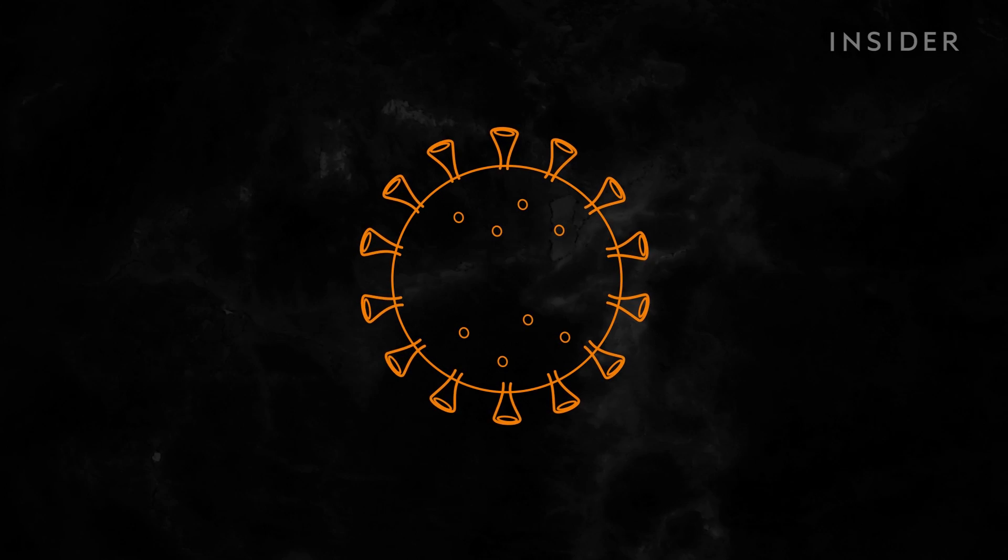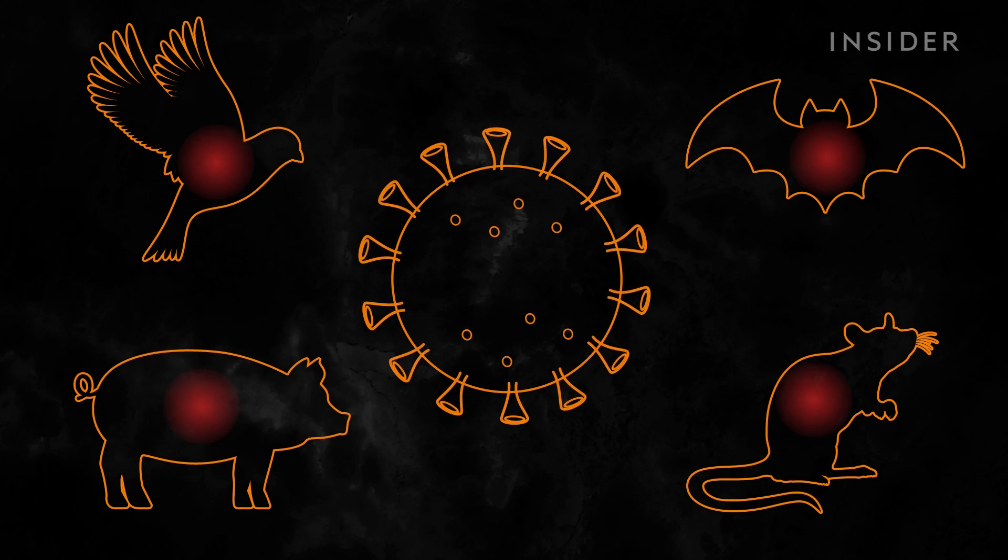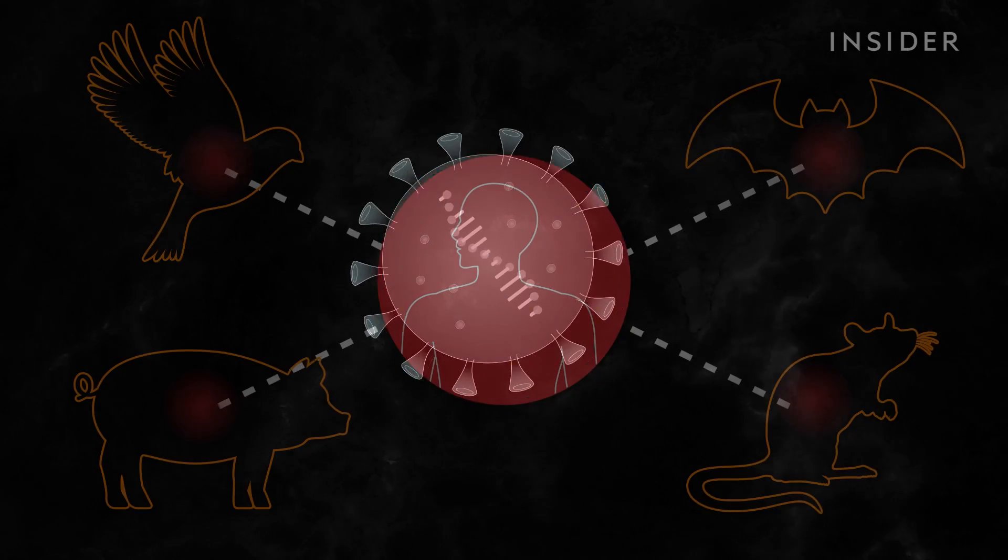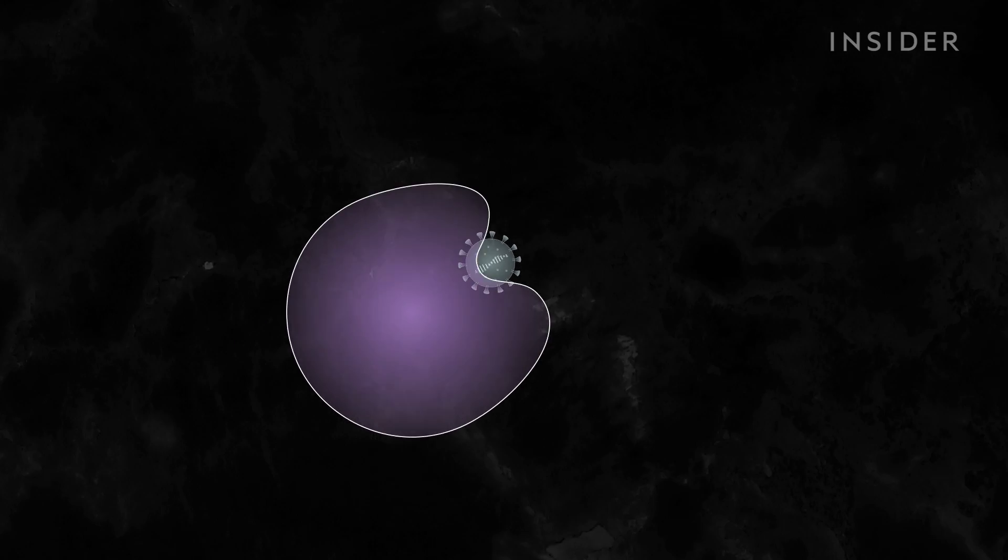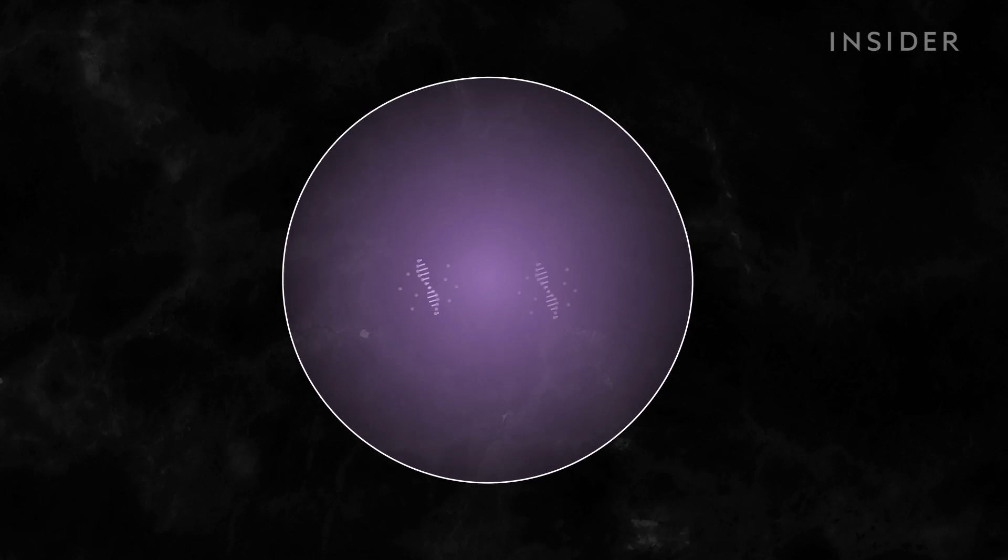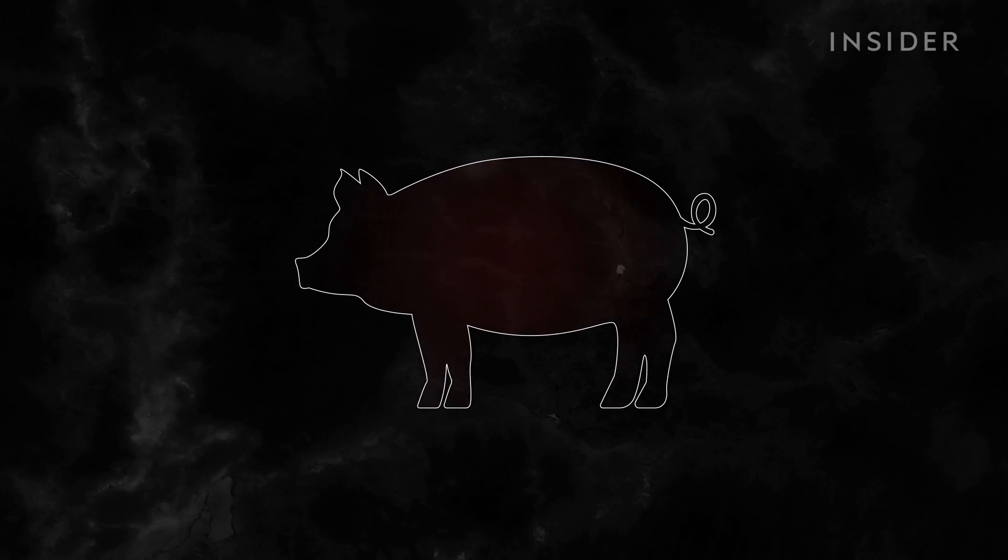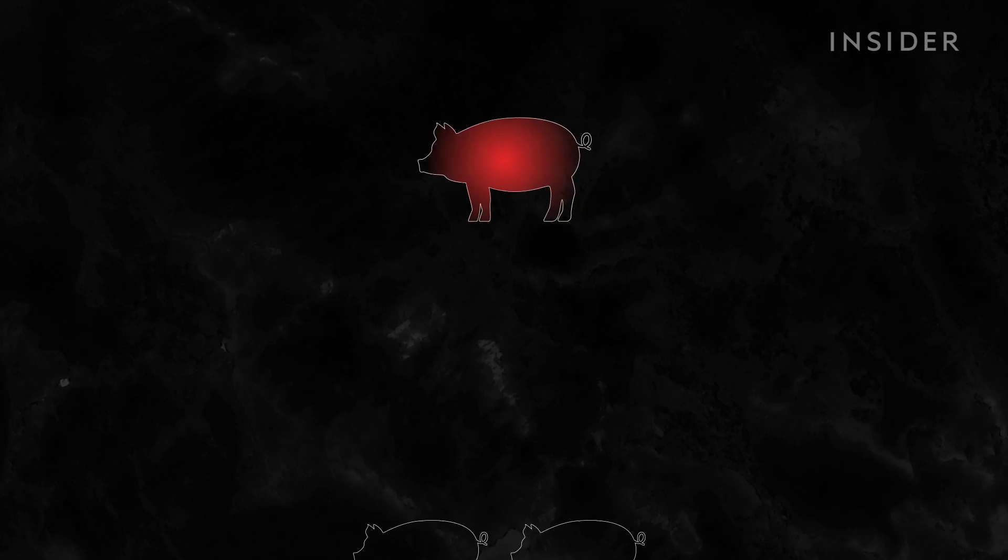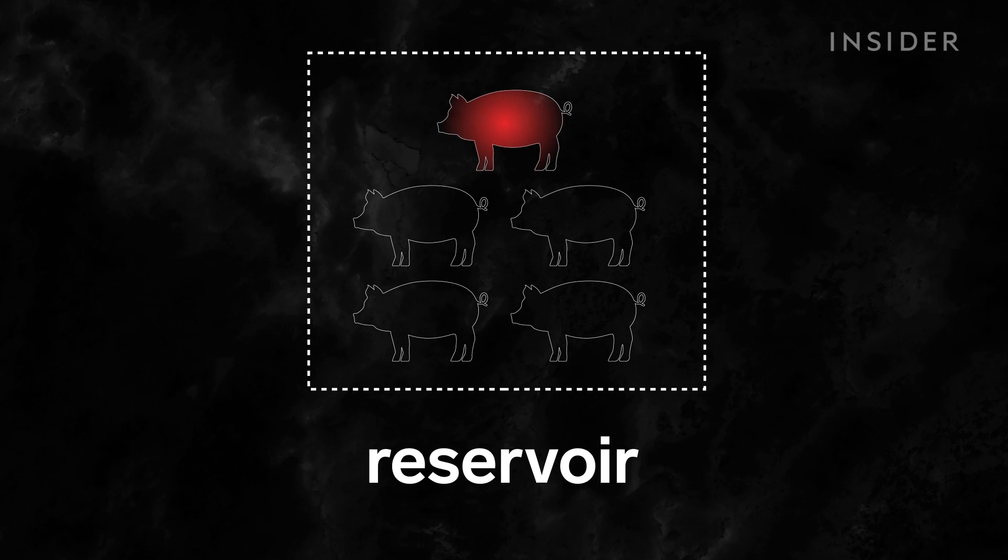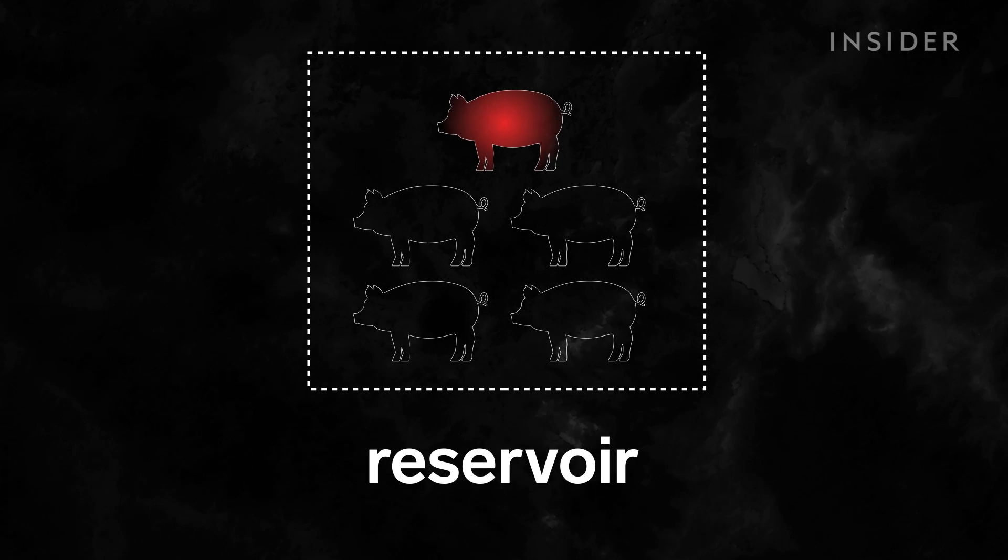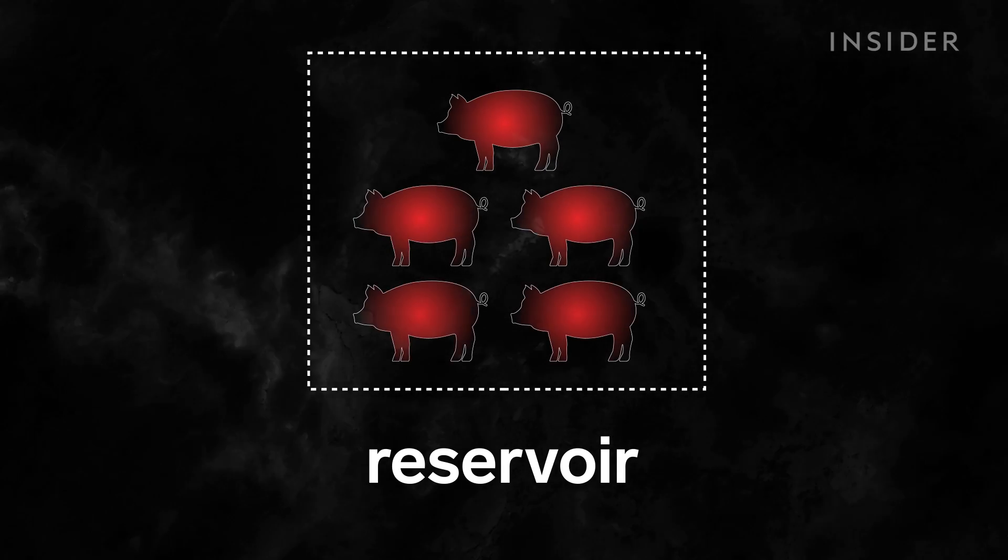Here's what needs to happen for a virus to jump from animals to humans. As a pathogen, the virus's goal is to infect its host and replicate, because it can't do that on its own. Let's say this pig is the original host of a virus. He and his buddies form a reservoir, a specific population of animals of the same species that naturally host a pathogen.